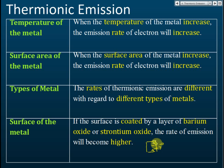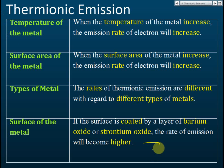Barium oxide is not a metal — it cannot conduct electricity, so it's very hard to heat it, and its temperature also increases very slowly because its specific heat capacity is high. So it's not practical to use a piece of barium oxide as the emitter. Normally what we do is use a filament, because when current flows through the filament, its temperature can increase very fast.